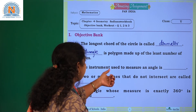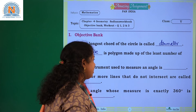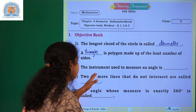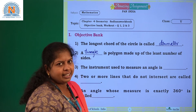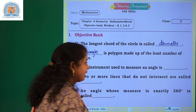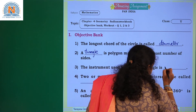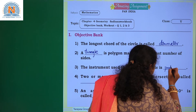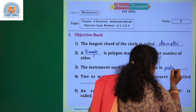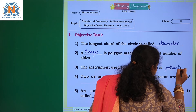The instrument used to measure an angle is — what is the instrument used to measure an angle? It is a protractor. The instrument used to measure an angle is the protractor.